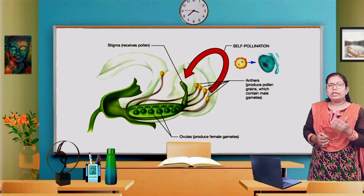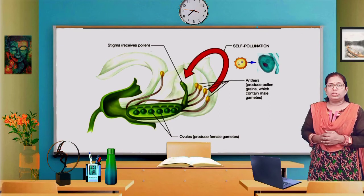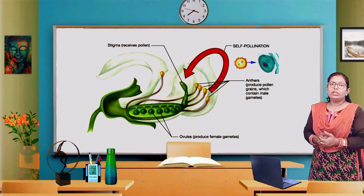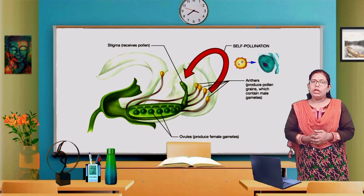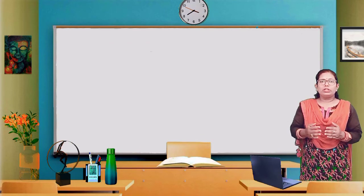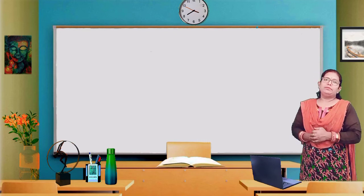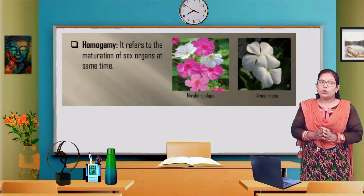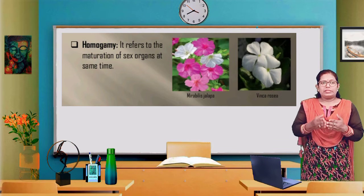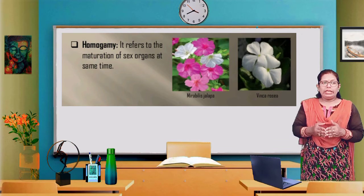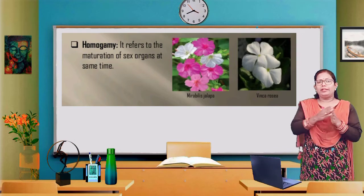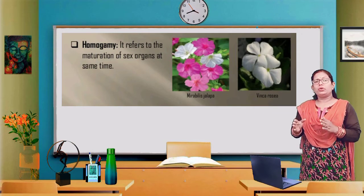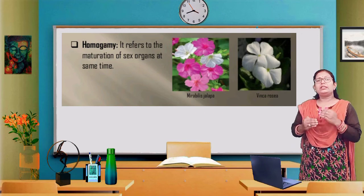The second circumstance is that if male and female reproductive parts mature at different times, self-pollination is not possible. So for self-pollination, it is very important that both reproductive parts mature at the same time. This condition is known as homogamy. Homogamy means the anther and stigma of a flower — or two flowers present in a plant — mature at the same time.